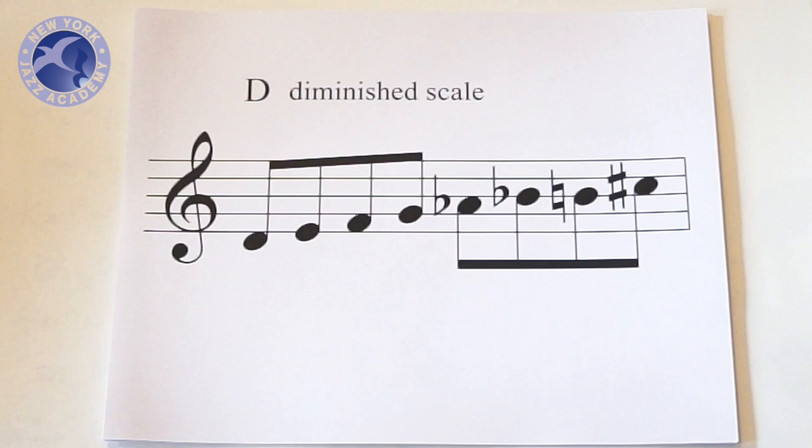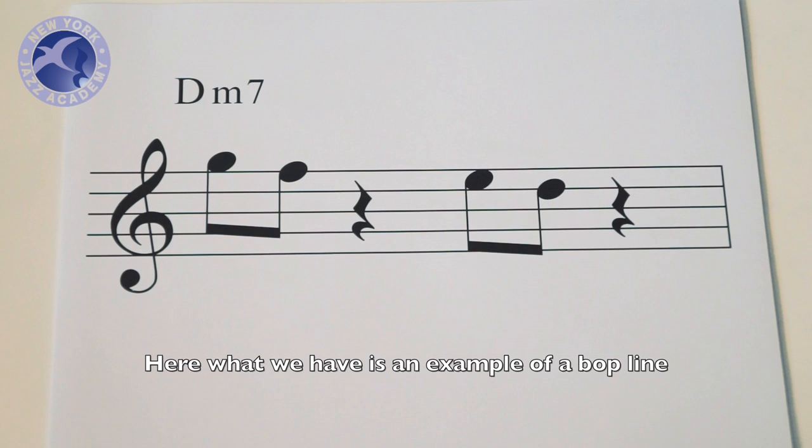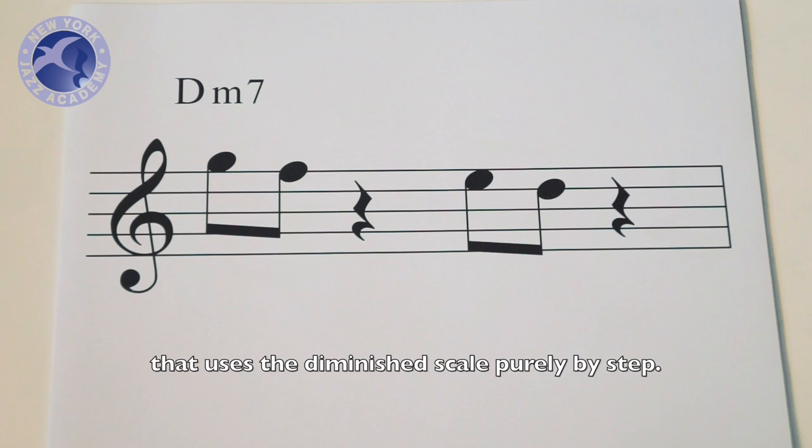This is Javier Arao with New York Jazz Academy, and we're going to continue looking at the use of the diminished scale over a 2-5-1. Here what we have is an example of a bop line that uses the diminished scale purely by step.